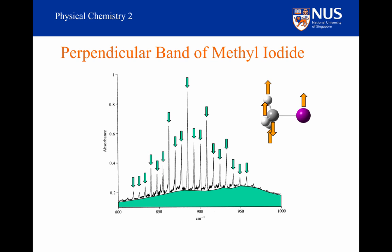So this is what we are seeing here. The P and R branches are the unresolved structure at the bottom, shown here in green. The intense lines on top are individual Q branches. The distance between the Q branches is related to the difference between the A and B rotational constants.